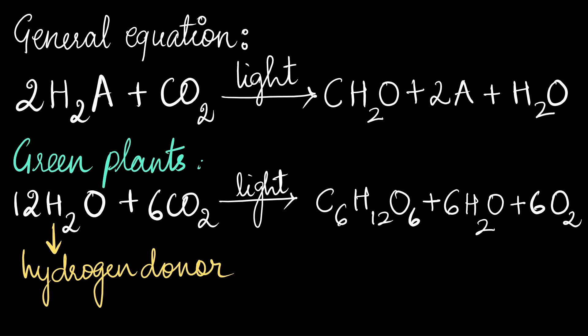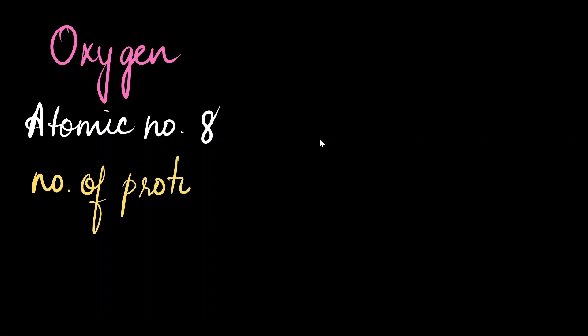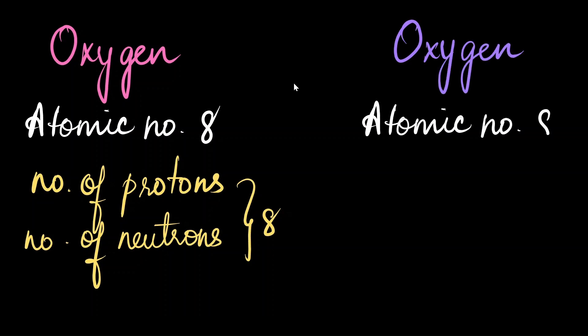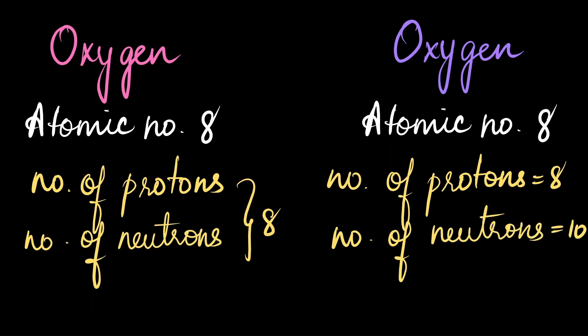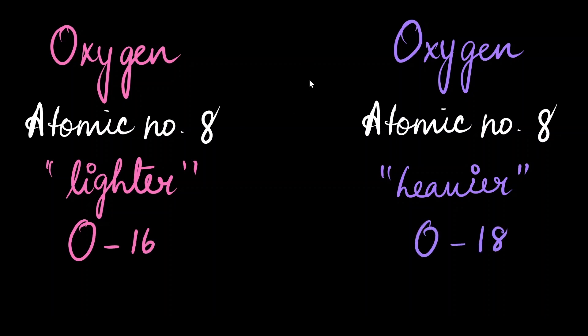This theory was later proved using a radioisotopic technique. Regular oxygen has atomic number 8, with 8 protons and 8 neutrons — this is oxygen-16. There is another form of oxygen that also has atomic number 8 but has 10 neutrons — this is oxygen-18, the heavier version. Oxygen-18 is a radioisotope: an unstable form of an element that emits radiation as it undergoes radioactive decay trying to reach a stable form. Isotopes are elements with the same atomic number but different mass numbers, as seen in this case.